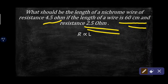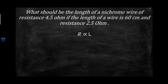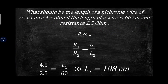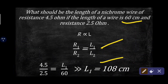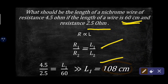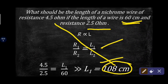Since resistance is directly proportional to length, we can establish this relation and calculate the length of the conductor. The length of the conductor will be 108 centimeters. As length increases, resistance also increases — when 60 cm wire has resistance 2.5 ohm, the 108 cm wire has resistance 4.5 ohm.